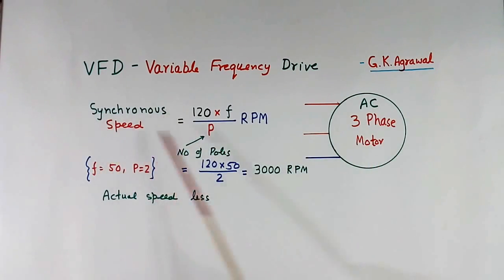Now synchronous speed of AC motor is given by formula 120F by P, where F is the frequency of the supply and P is the number of poles. Suppose F is 50 hertz and P is 2. Then synchronous speed will be 120 into 50 by 2, equal to 3000 RPM. This is synchronous speed. Actual speed will be little less, about 2 to 5 percent less than this.